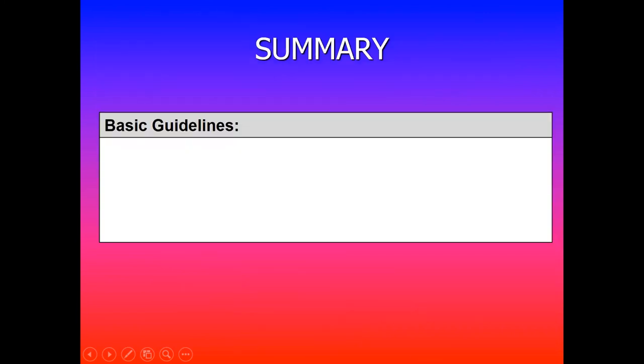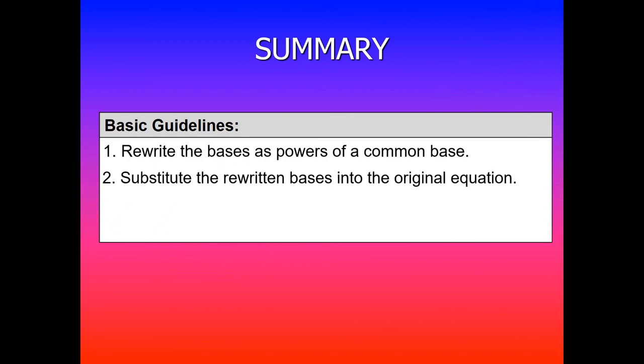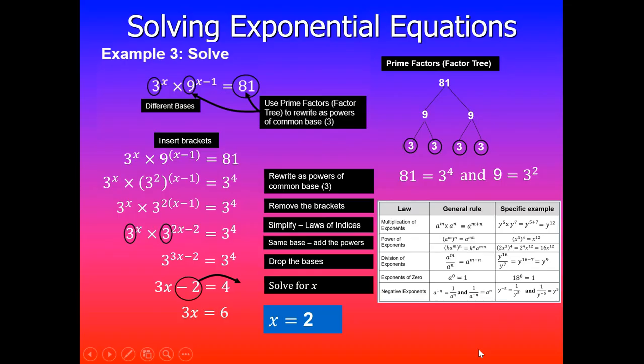Done. So here's a quick summary. What you need to do first is rewrite the bases as powers of a common base, and then substitute the rewritten bases into the original equation. Once you've done that, then you simplify exponents if possible using laws of indices, and then you can solve for the variable. I hope this makes sense.